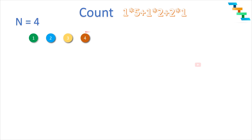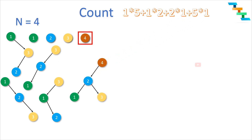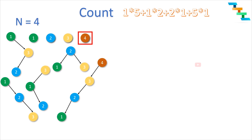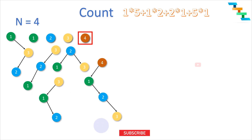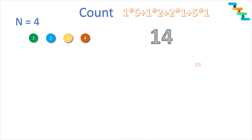Now making 4 as the root node. In this case there is no value greater than 4, so there is no right subtree. We have 3 nodes which form the left subtree. When n is 3 there will be 5 unique subtrees, so we can form 5 unique subtrees when the root node is 4. So for n equals 4 we have 14 unique binary search trees in total.